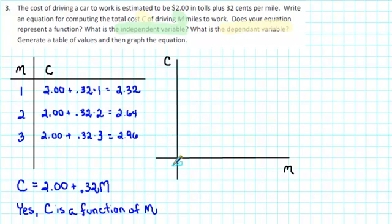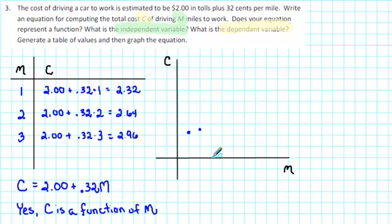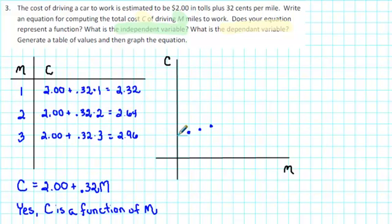Finally, we need to sketch a graph of the equation. To sketch the graph, we can plot the ordered pairs from our table. When the number of miles is one, the cost is two dollars and 32 cents. When the number of miles driven is two, the cost is two dollars and 64 cents. When the number of miles driven is three, the cost is two dollars and 96 cents. We can see the pattern that this graph will be a straight line passing through these three points. I'm going to draw a line through these points, starting at two on the C axis because we have two dollars in tolls to start with, and then adding 32 cents per mile.